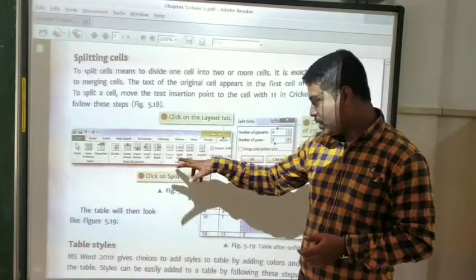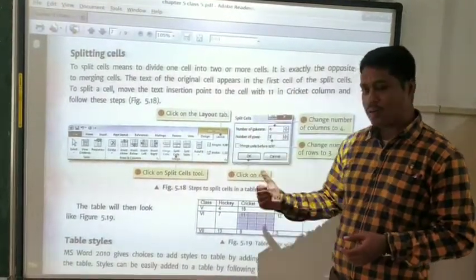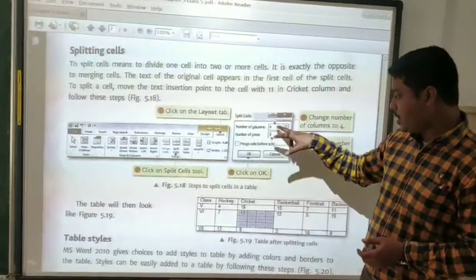You have to go to the Layout tab. You will find the option called Split Cells. Then you will see how many columns and how many rows you need. You can enter it here.